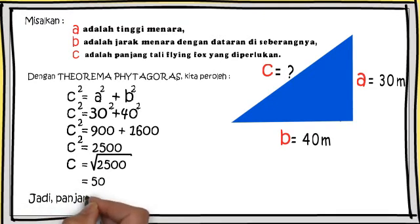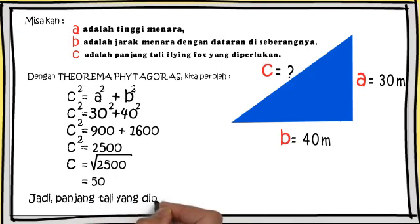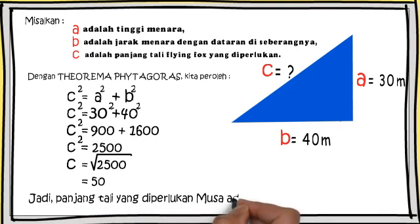Jadi, panjang tali yang diperlukan Musa adalah 50 meter. Bagaimana, mudah kan?